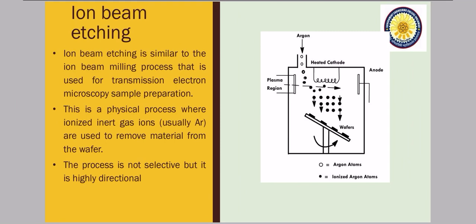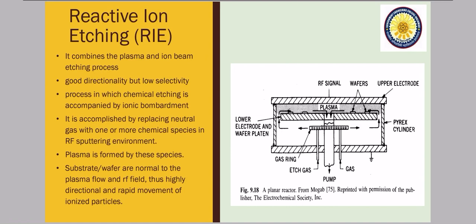Moving on, we have reactive ion etching — RIE in short form. It basically combines your plasma and your ion beam etching process — it is a combination of both. It has very good directionality but a little low selectivity. We will discuss this in detail in the next slide.